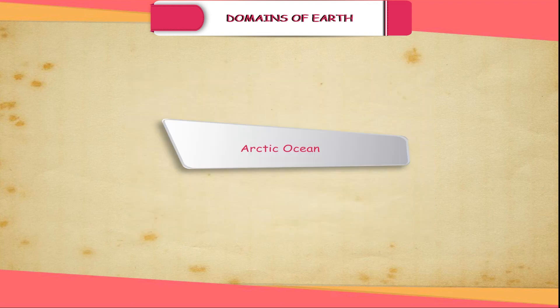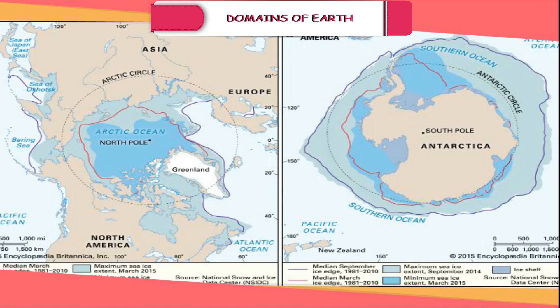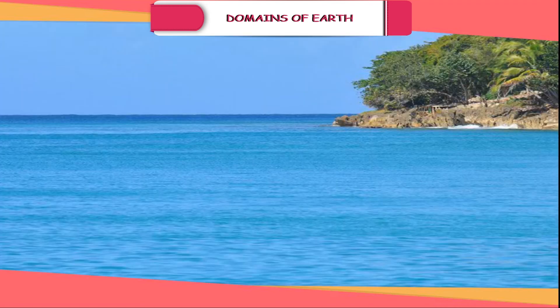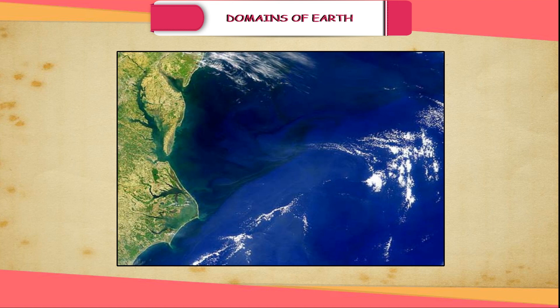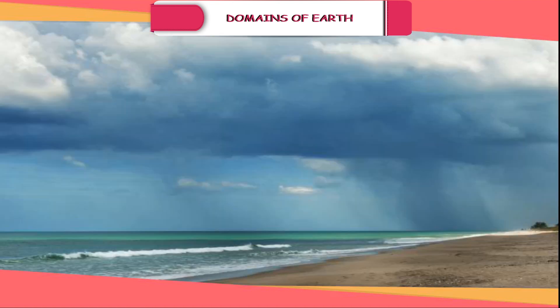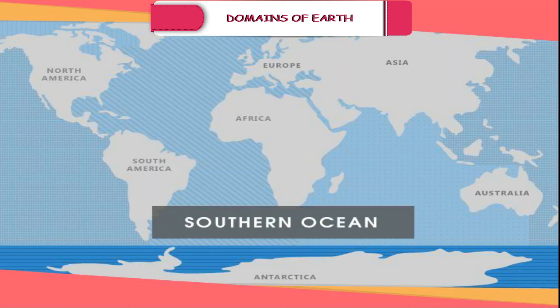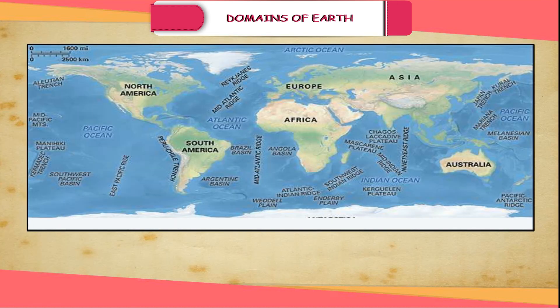Arctic Ocean surrounds the North Pole within the Arctic Circle. It is usually considered the northern extension of the Atlantic Ocean. It is connected with the Pacific Ocean by a narrow stretch of shallow water known as the Bering Strait. It largely remains frozen with thick sheets of ice and is bounded by the northern coasts of North America and Eurasia. The Southern Ocean surrounds the continent of Antarctica at the South Pole and is also considered as an extension of the Pacific, the Atlantic and the Indian Oceans.